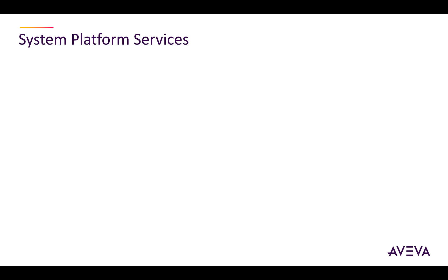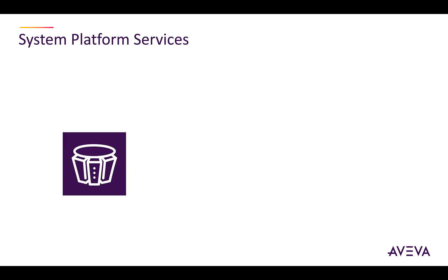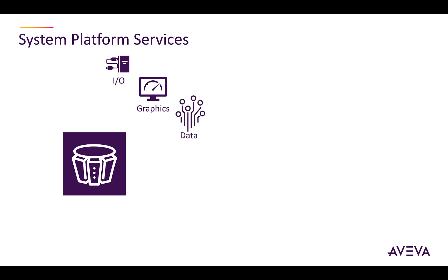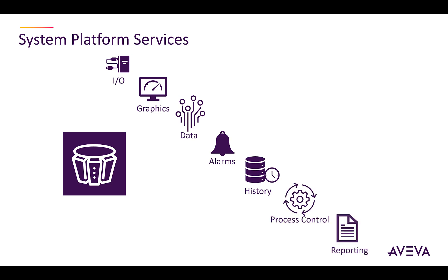System Platform, together with its clients, provides the core services needed to develop, implement, and deploy industrial automation applications. Some of these services include real-time data acquisition from field devices, visualization of real-time process data, scaling, statistics, and manipulation of data, alarm triggering, logging, acknowledgement, and management, historization, trending, and analysis of process data, process control, and reporting.